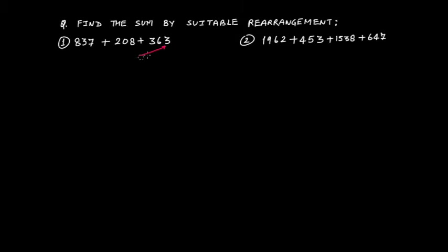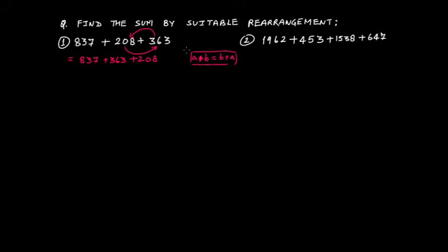So what you have to do is make the rearrangement like this: 837, then 363, then 208. Notice that I have changed the order. The property used here is the commutative property of whole numbers, which states that a plus b equals b plus a. So we have just changed the order using the commutative property.